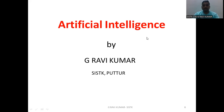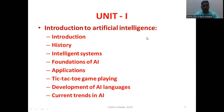What are the contents in our artificial intelligence unit one? First is the introduction to artificial intelligence, history of artificial intelligence, intelligence systems, foundation of AI, applications of AI, and one real-time application — tic-tac-toe game playing. Also development of AI languages and current trends in AI technologies. This is the content covered in our unit one syllabus.